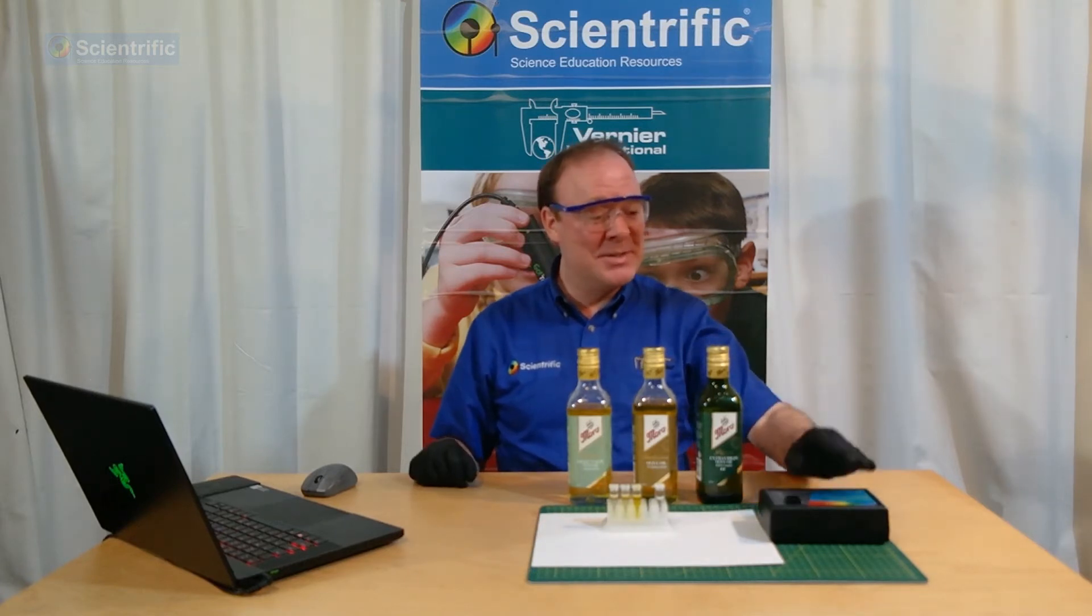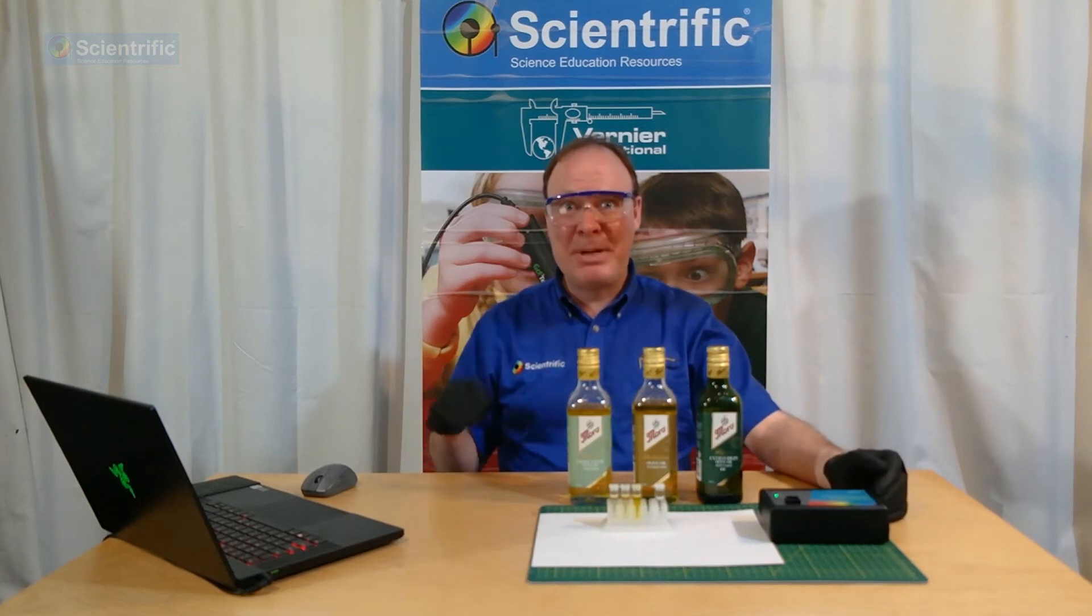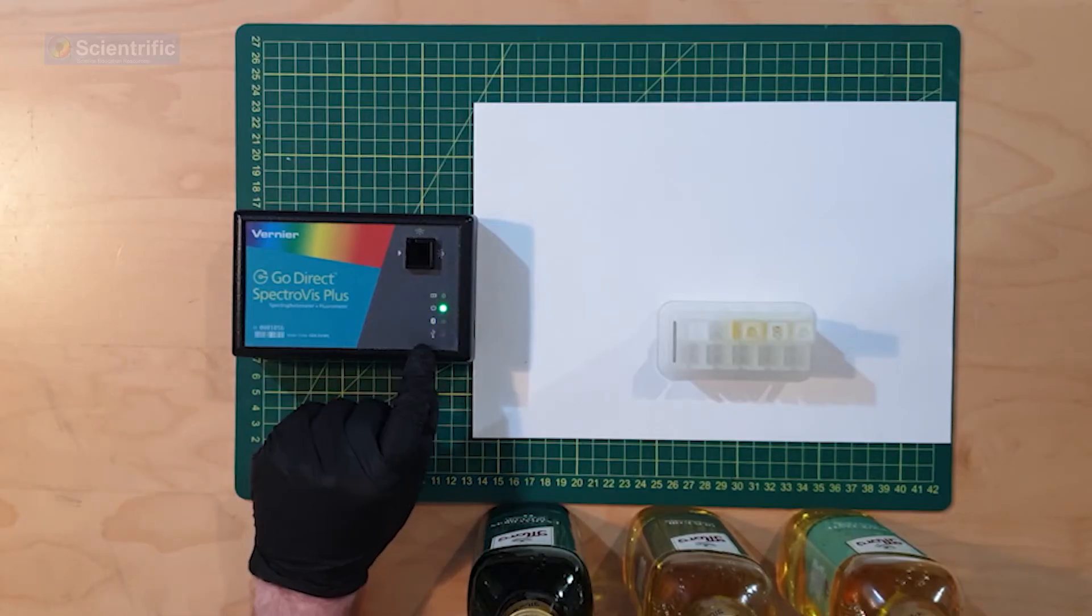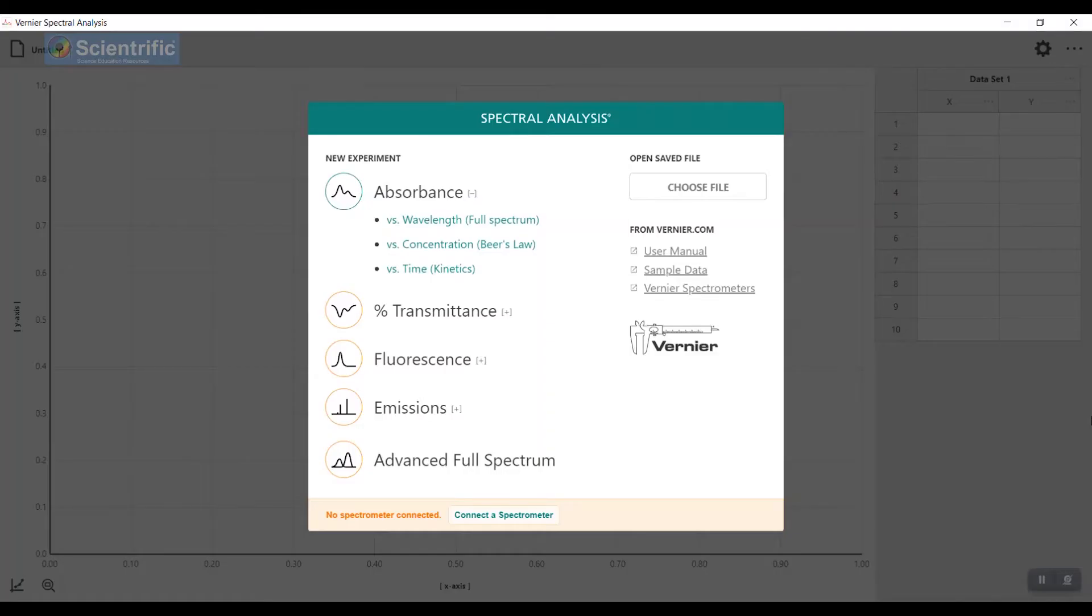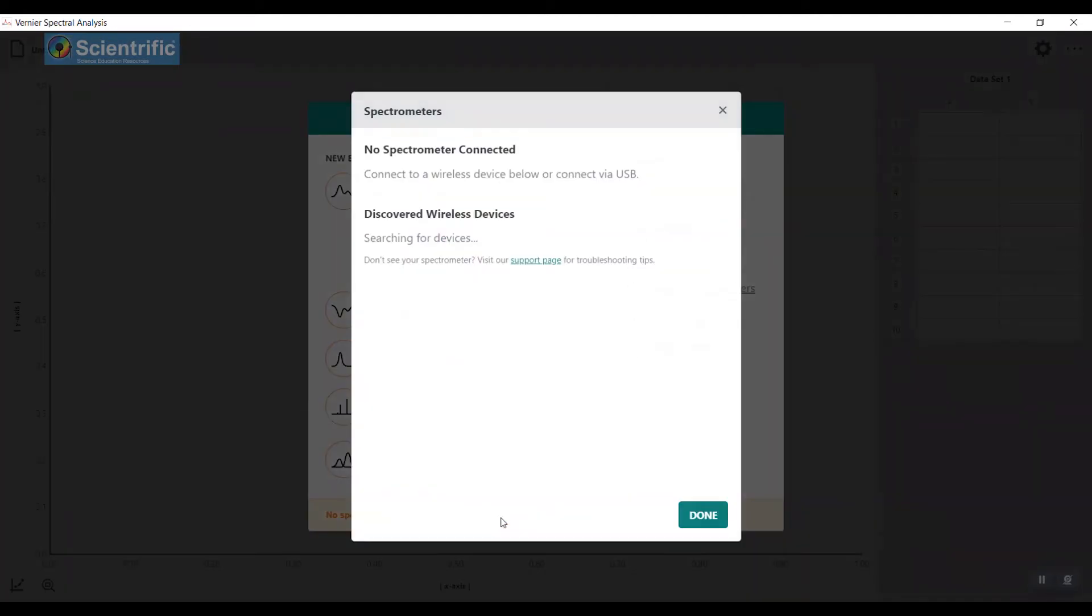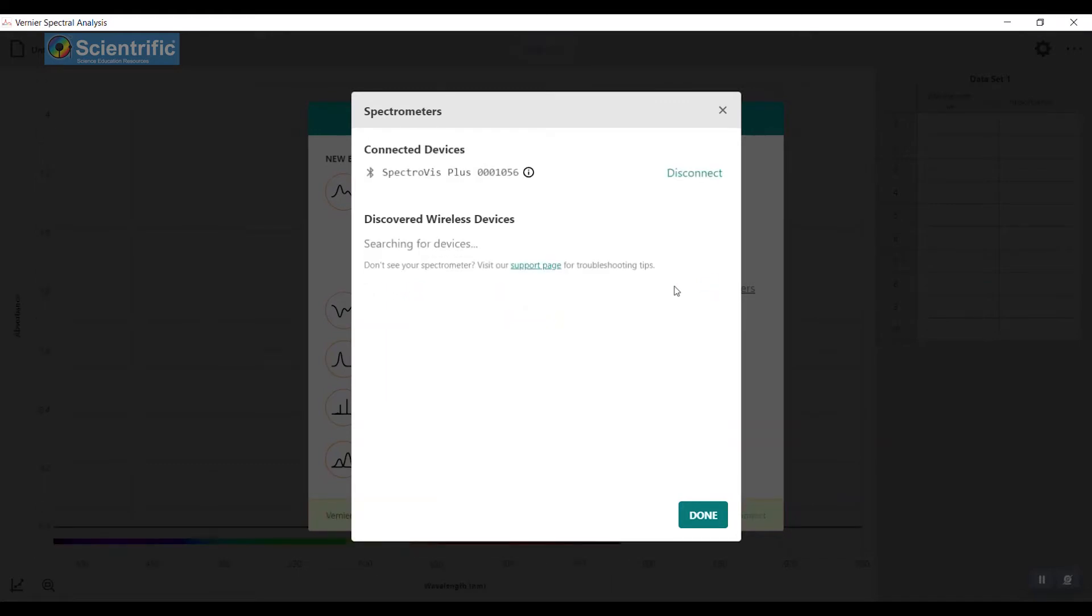I'll connect the spectrophotometer to Spectral Analysis to begin with. The blue light's flashing, which means it's sending out the Bluetooth signal. On Spectral Analysis, I'll go to connect a spectrophotometer. Now that it's connected, I'll go to done.